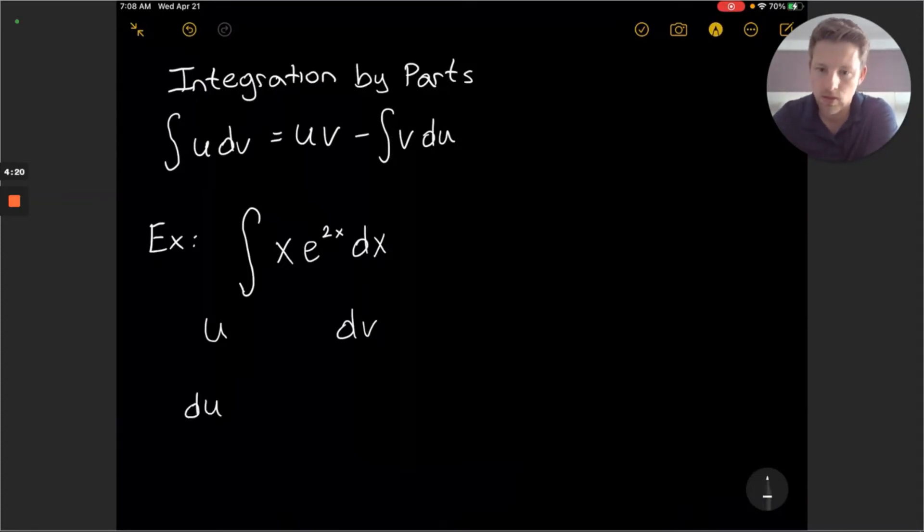And we'll take an antiderivative of the dv function and call that v. So let's begin by finding these four components.